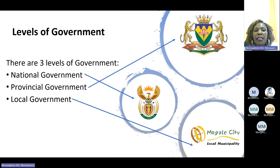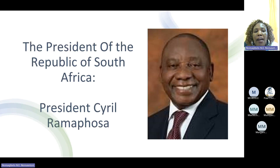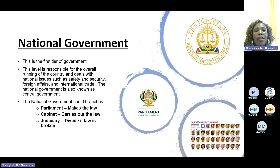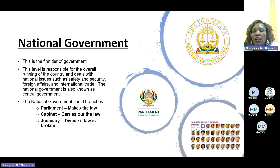We have three levels of government. Our national government is headed by our president, President Cyril Ramaphosa. The national government is the first tier of our government and is responsible for the overall running of the country and national issues such as safety and security, foreign affairs and international trade. The national government is also known as the central government.